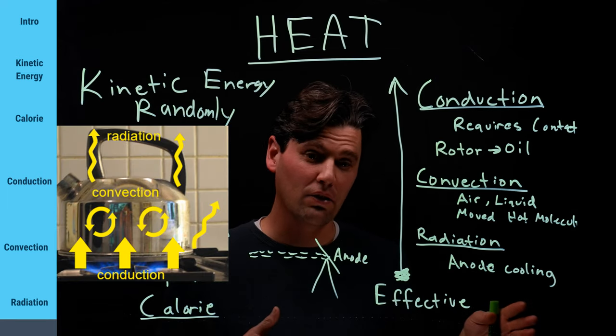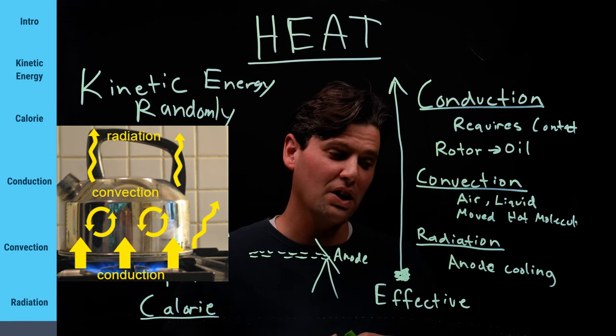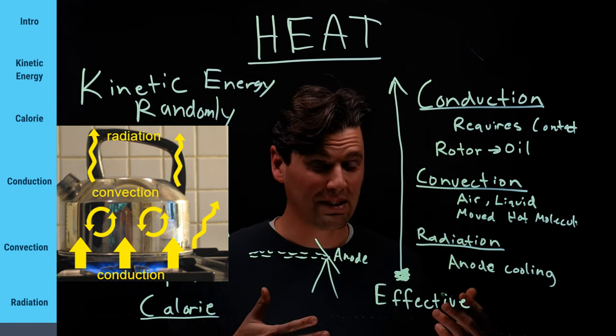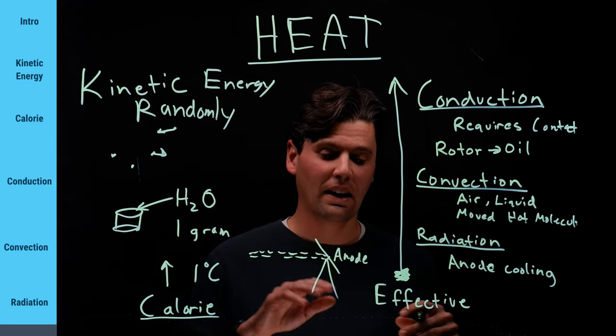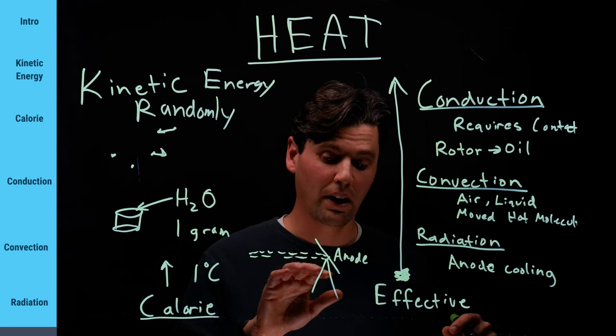And then convection is when there's some active movement there, for instance, in an air or liquid. And radiation is the least effective. And in that case, we gave the example of the anode cooling.